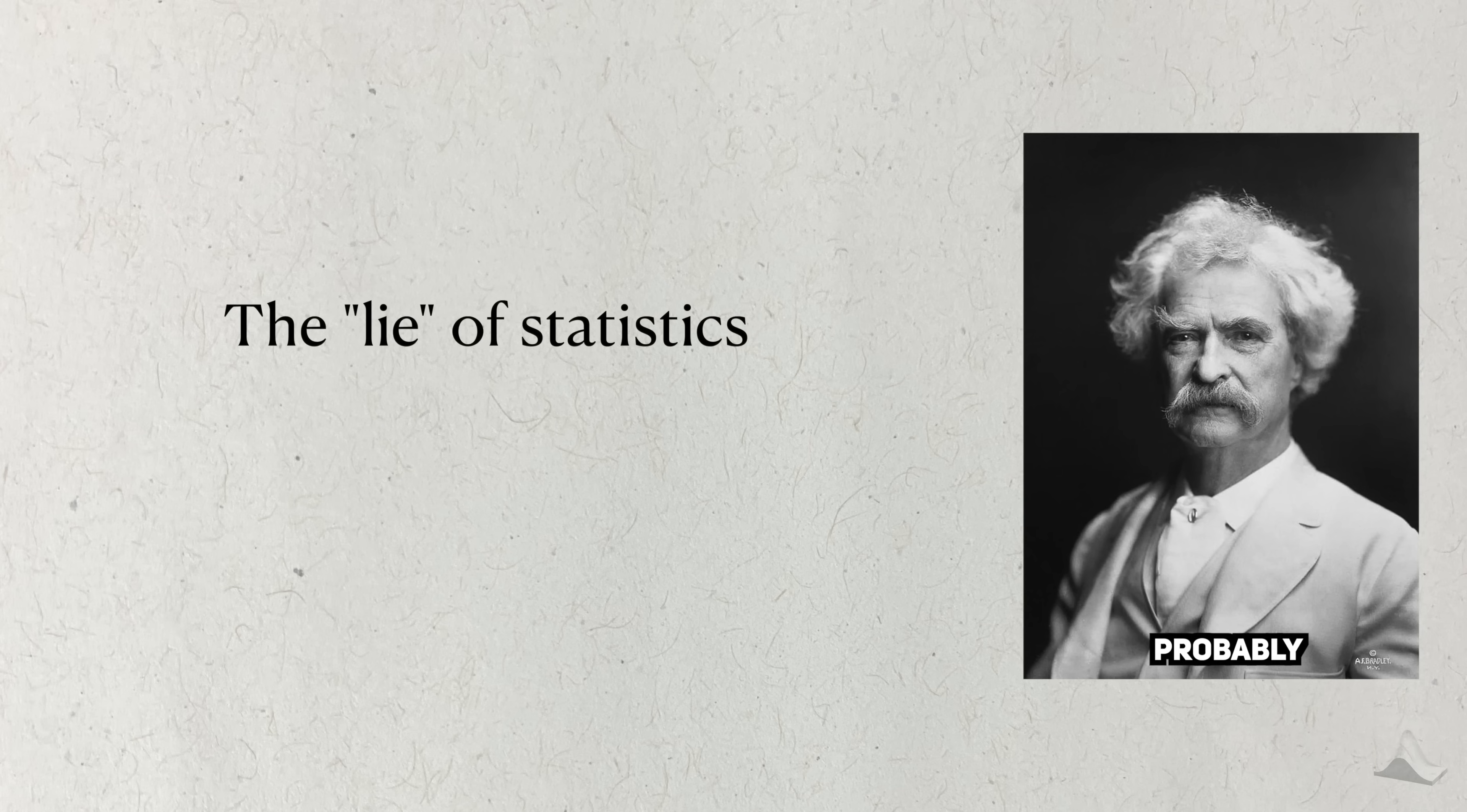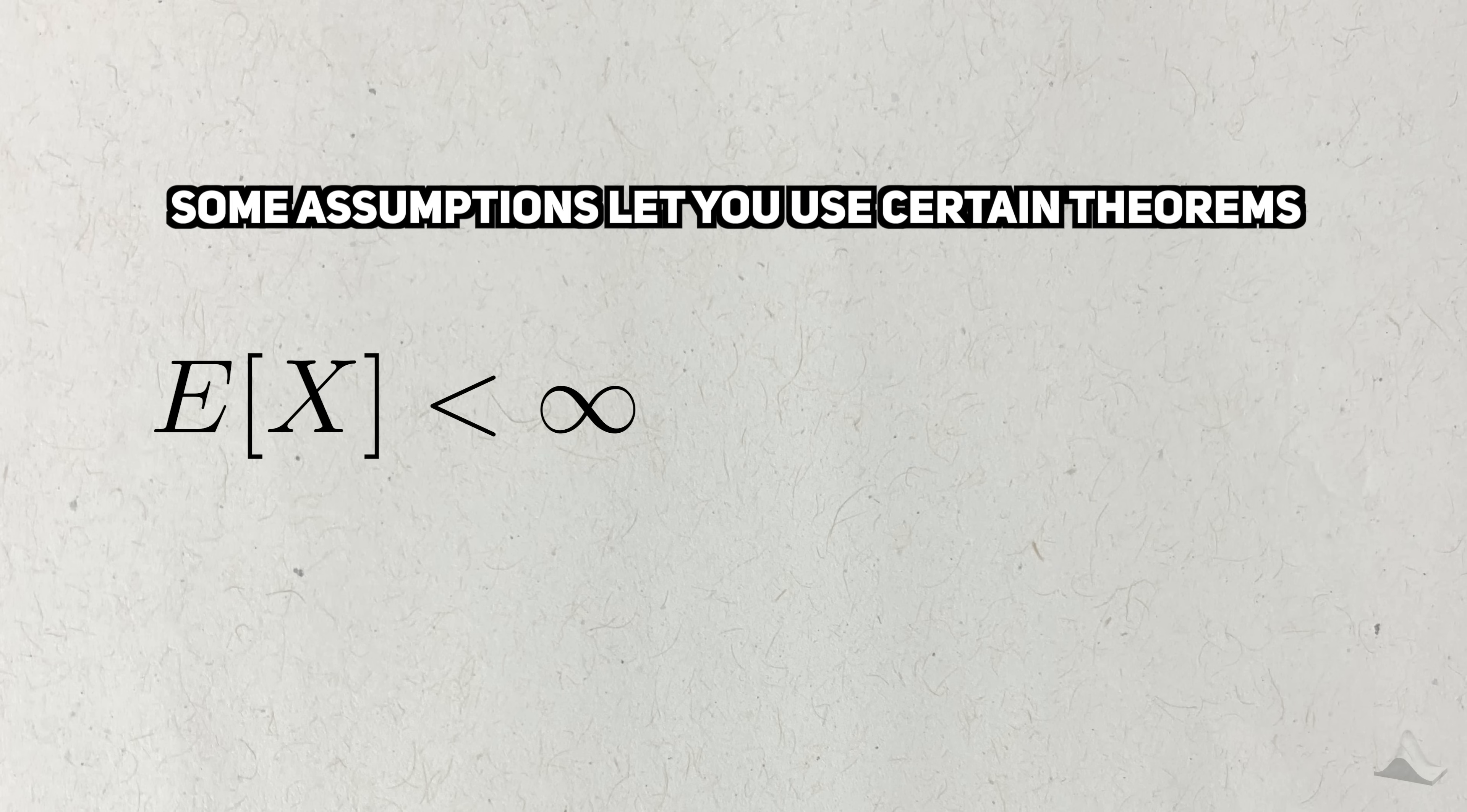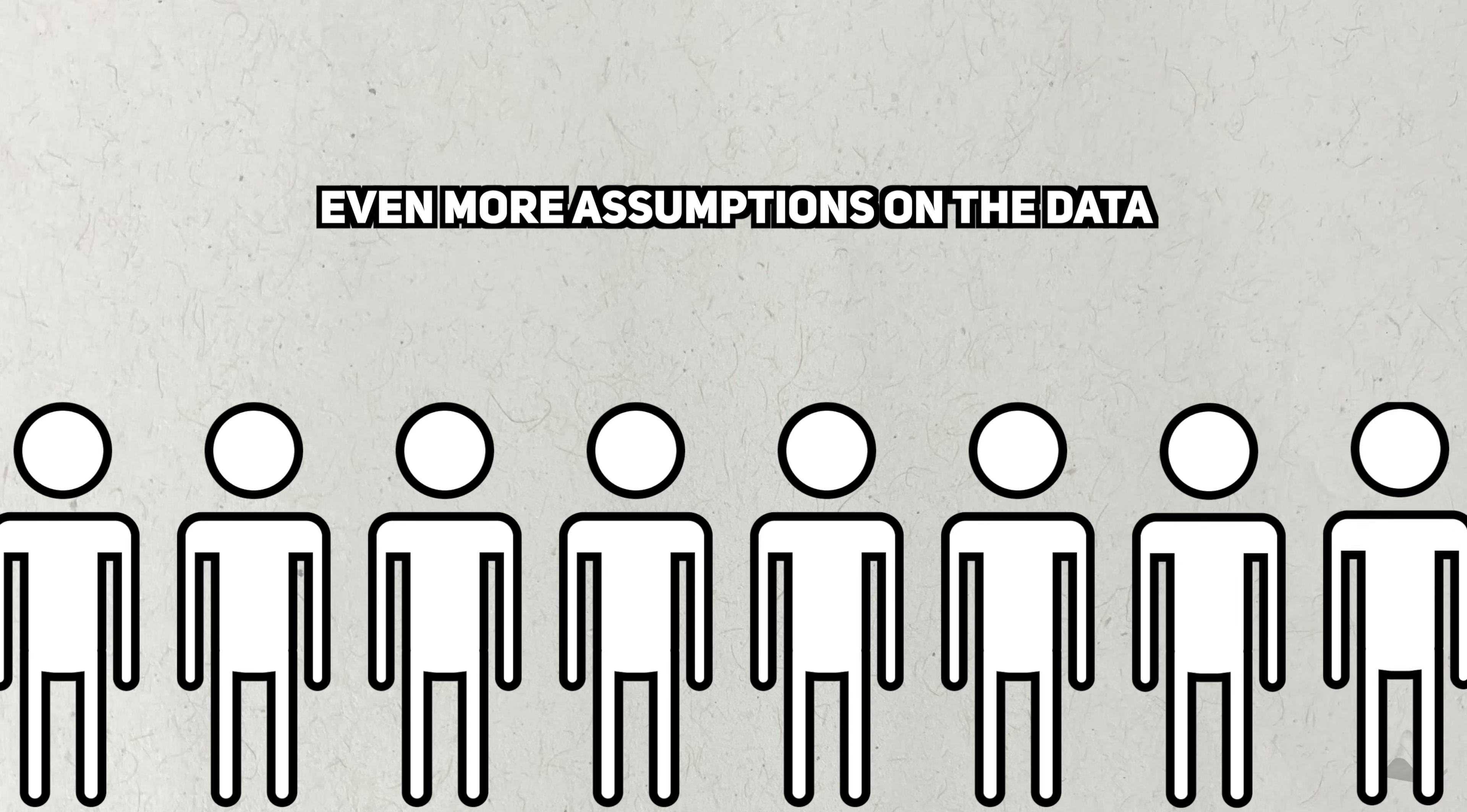More often than not, statistical models will require multiple assumptions. Some assumptions are used to make sure that you can take advantage of important theorems, like the law of large numbers, or the central limit theorem. Other assumptions are made to simplify hard problems. Instead of assuming a general probability distribution, we often assume the data comes from a parametric family. There are also assumptions about the data itself. One of the strongest assumptions we can make is that the data are independent and identically distributed. And as it turns out, this is a very strong assumption to make. While some statistical methods let us relax some assumptions, at the end of the day, you still have to make some of them.